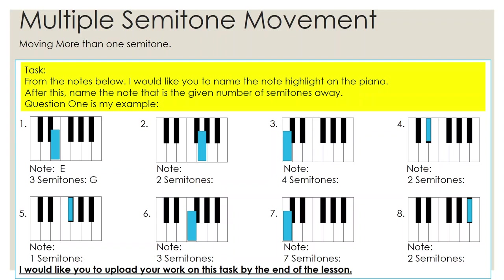For our task — multiple semitonal movement — just to reiterate once again, multiple semitonal movement is basically just moving more than one semitone. For this task, from the notes below, I would like you to name the note highlighted on the piano. After this, name the note that is the given number of semitones away. Question one is my example. The note highlighted on the piano in question one is E, because it's to the right of the two black keys. The left of the two black keys is C, so that means C, D, E.